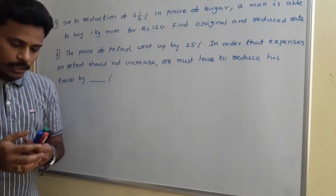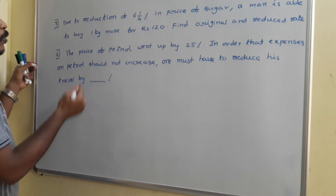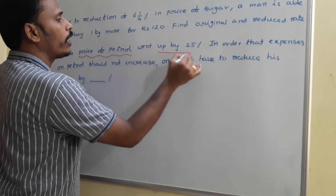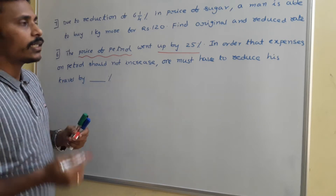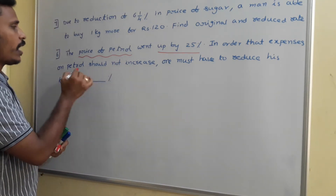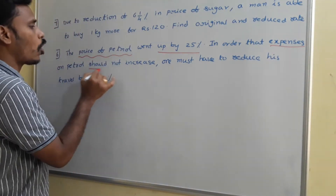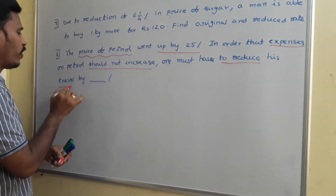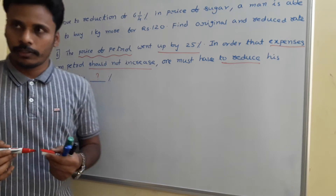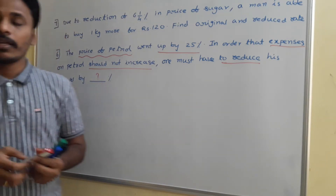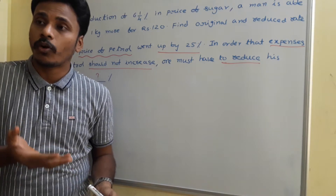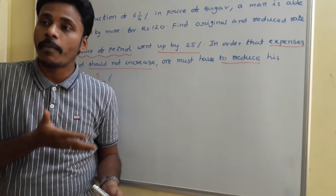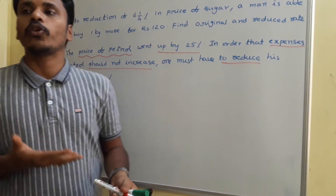Now look at the sixth problem. The problem is about the price of petrol. The price of petrol went up by 25 percent. In order that expenses on petrol should not increase, one must reduce their travel by how much percent? That's the question. The cost of petrol is increased by 25 percent, and since the cost is increased, to maintain the same expenditure on petrol we need to reduce our travel.